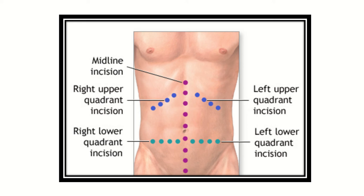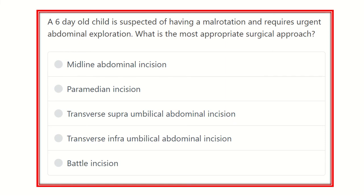Welcome to another question and answer session for the MRCS exam. Here the question: a six-day-old child — that means this is a neonate — is suspected of having a malrotation and requires urgent abdominal exploration. What is the most appropriate surgical approach?